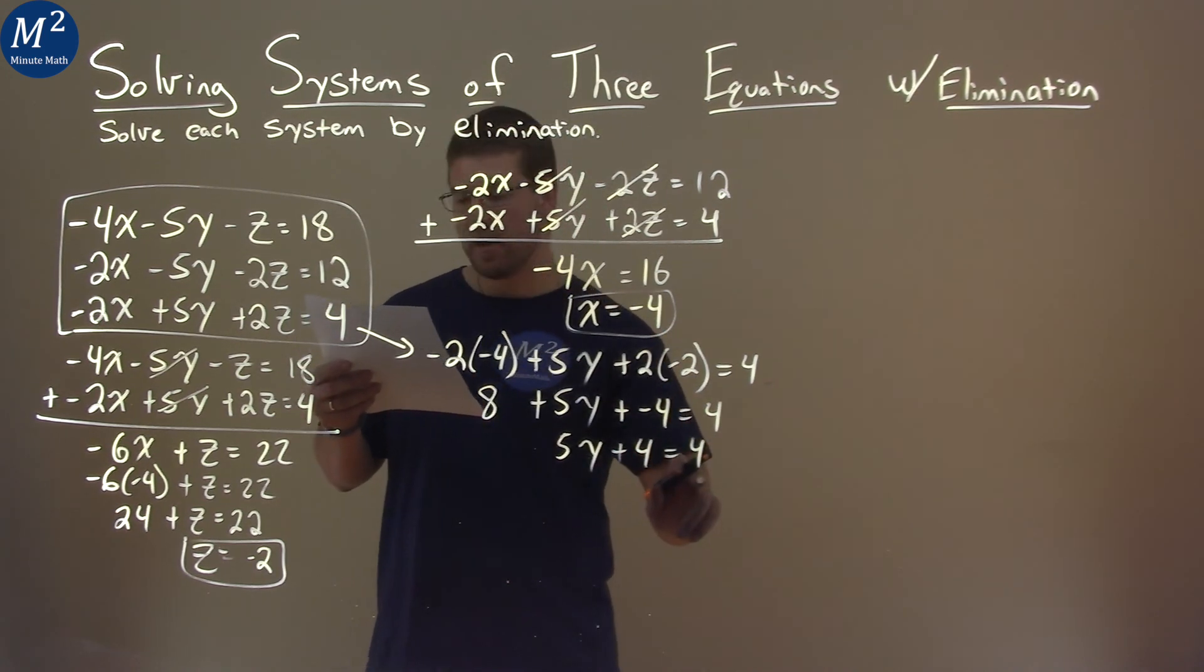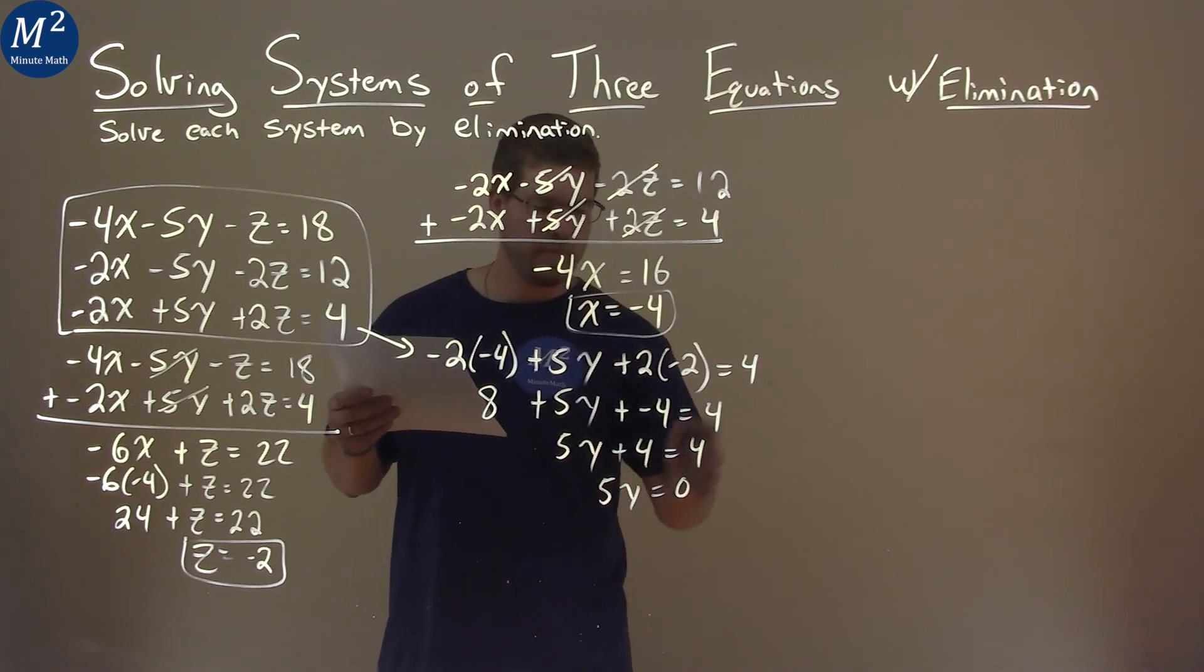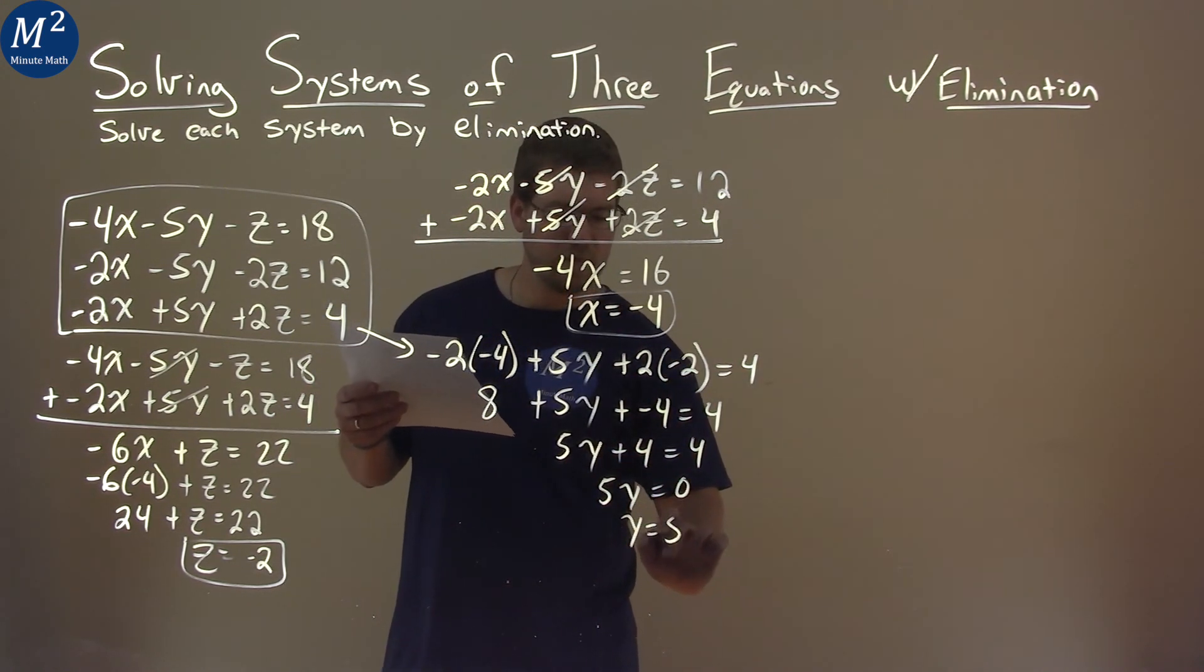Subtract 4 to both sides, 5y equals 0, and divide both sides by 5, and y equals 0.